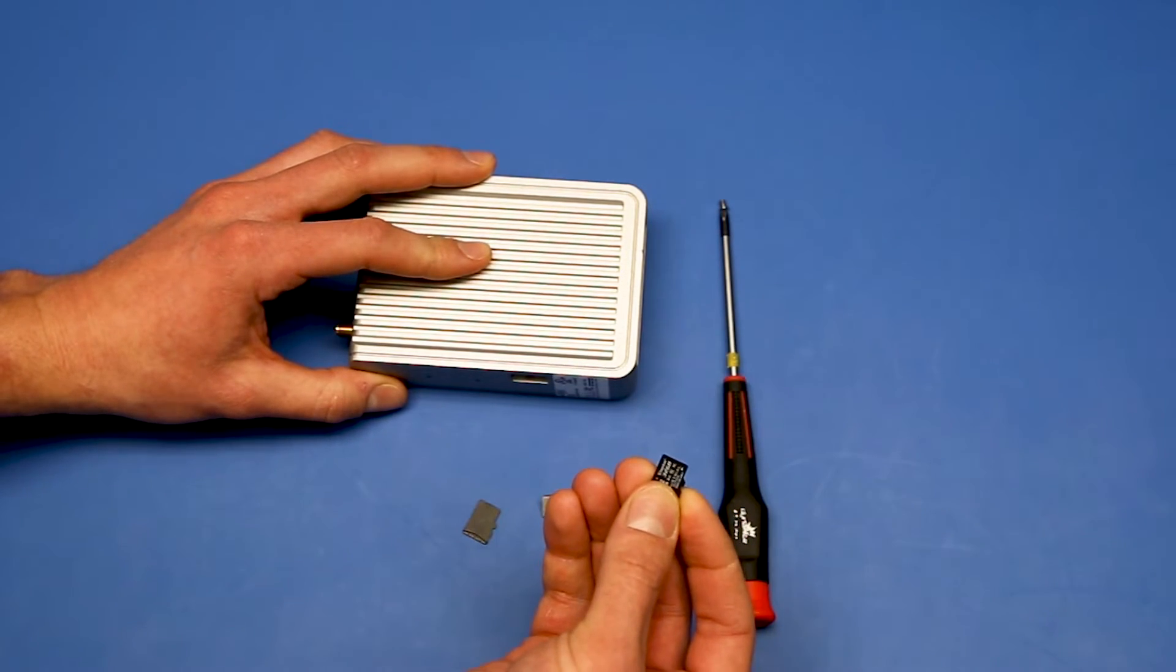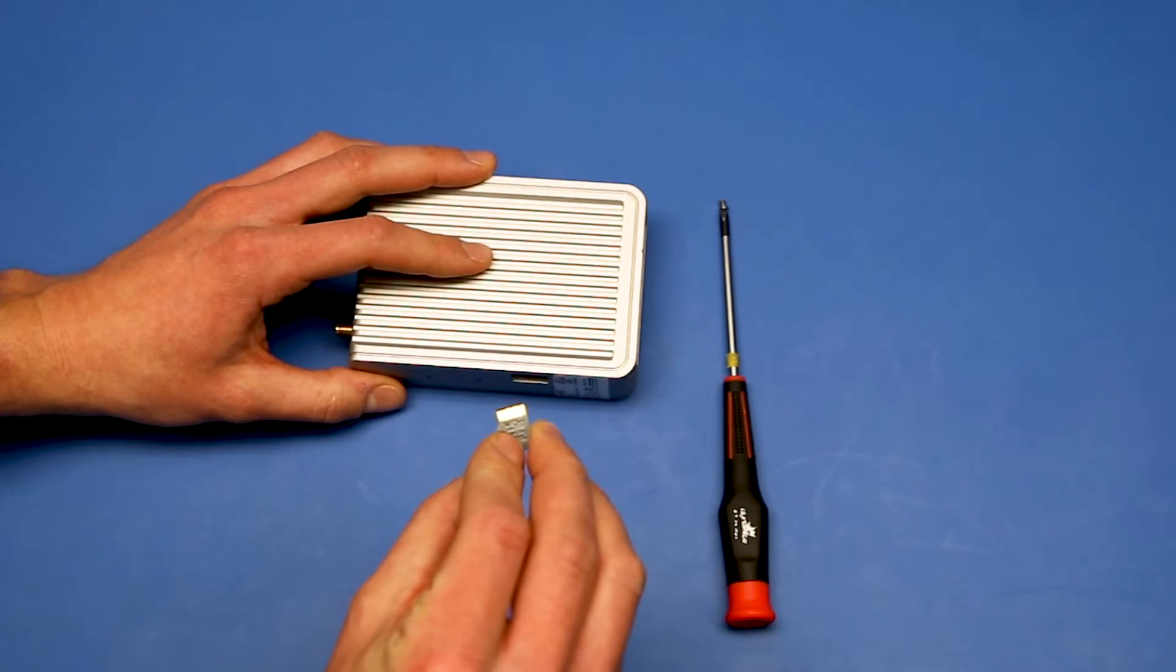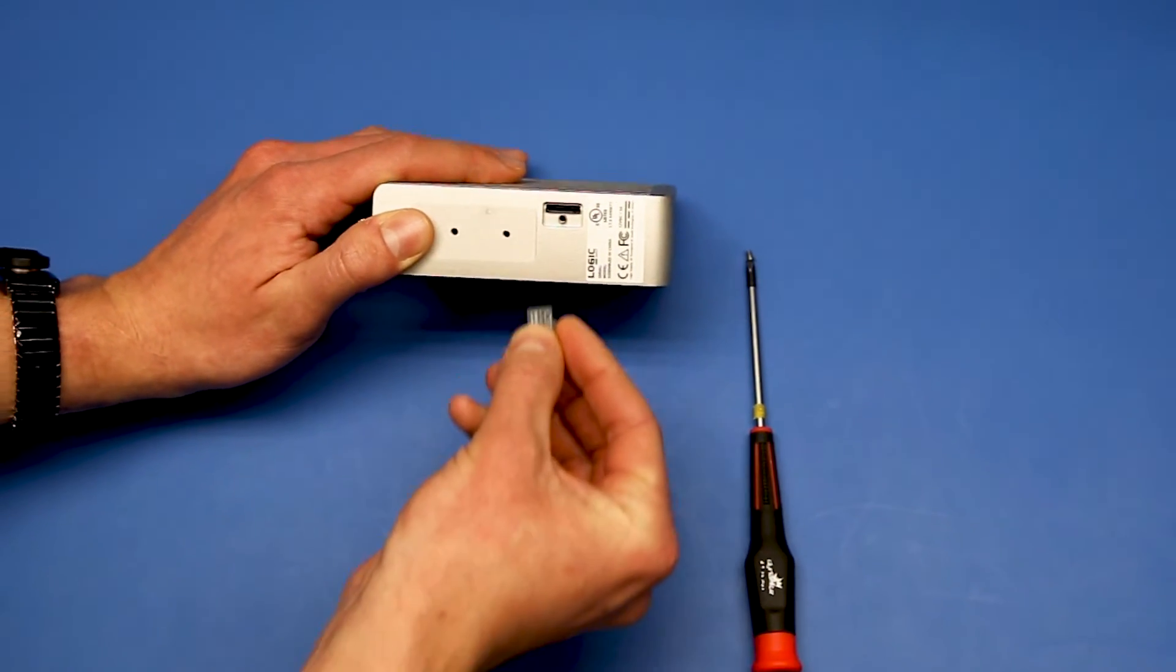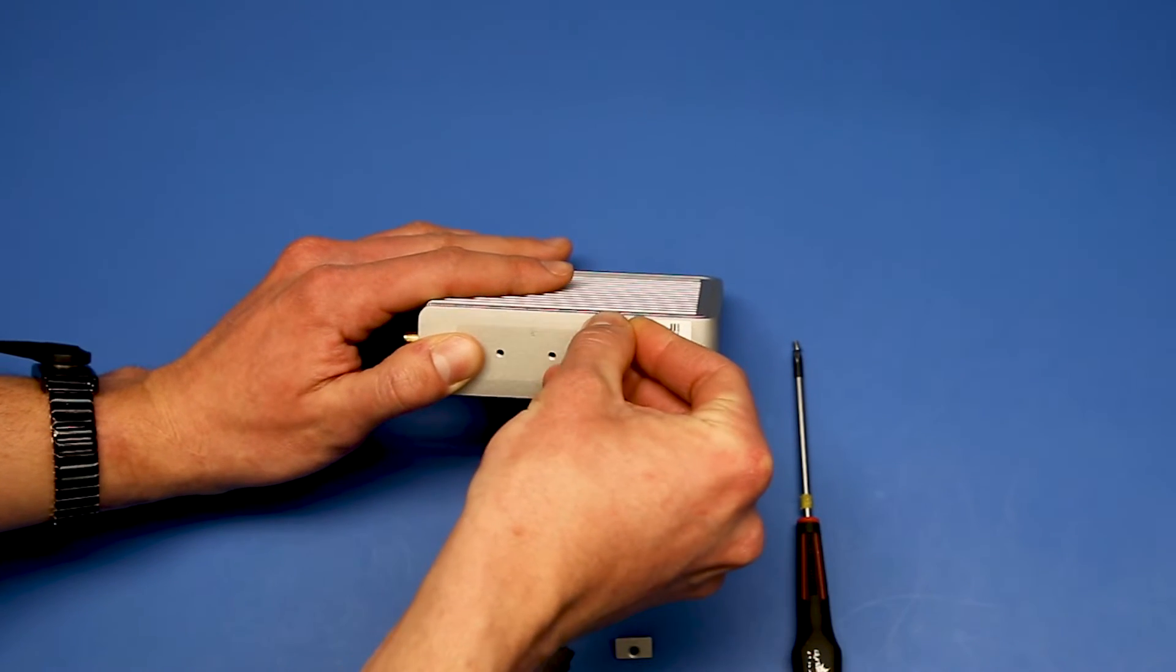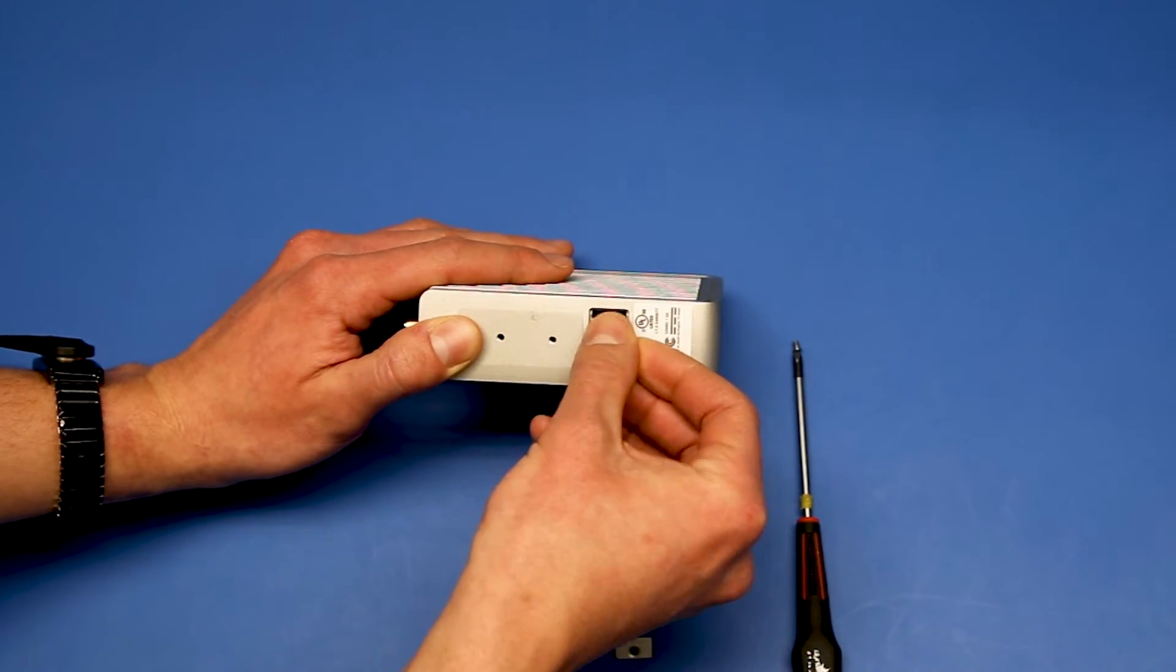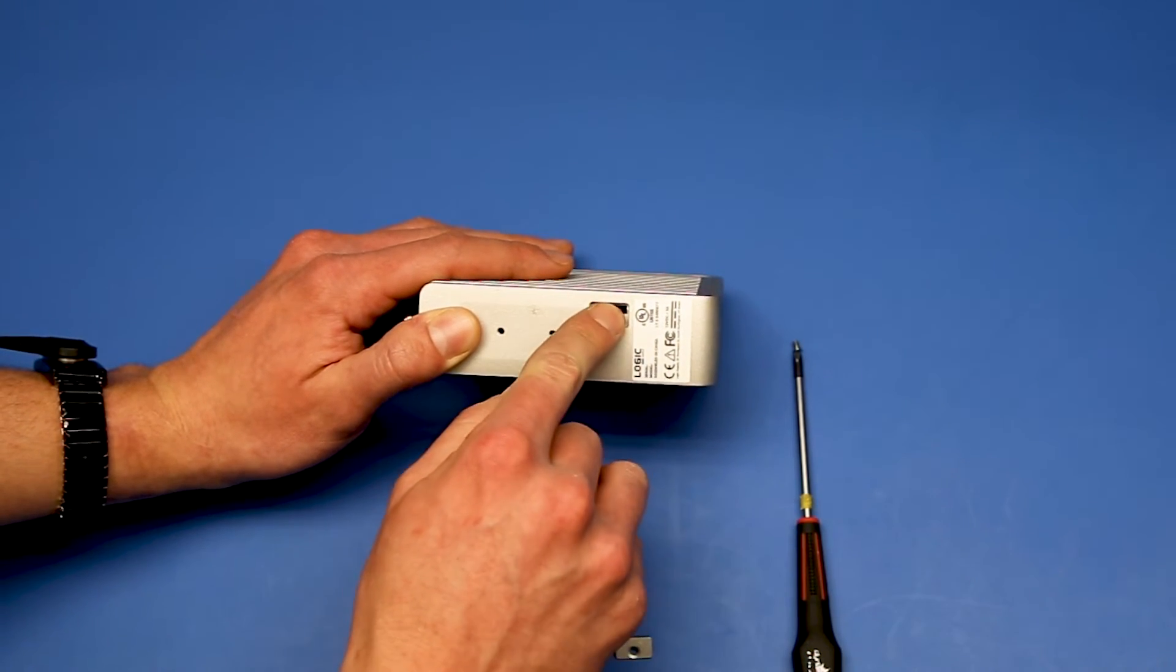Now it's time to install the SD card. You want to make sure that the pins are facing down during the install. Simply insert it into the slot and push just until you feel some resistance.